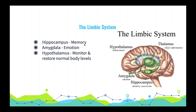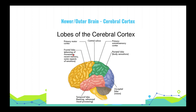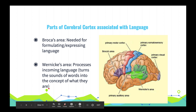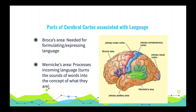A helpful mnemonic: if you saw a hippo on your college campus, it'd be really memorable — that's the hippocampus. Other parts of the limbic system include the amygdala, which regulates emotions, and the hypothalamus, which regulates basic motives like desire for food and sex. The newer part of the brain is primarily the cerebral cortex, which runs our complex motor functions and movement. The cerebral cortex also includes two important areas for language: Broca's area, needed for formulating and expressing language, and Wernicke's area, which processes incoming language — turning sounds into your understanding of what a word means.